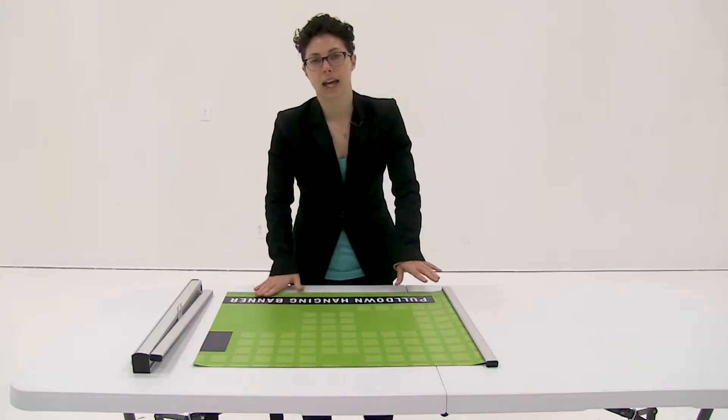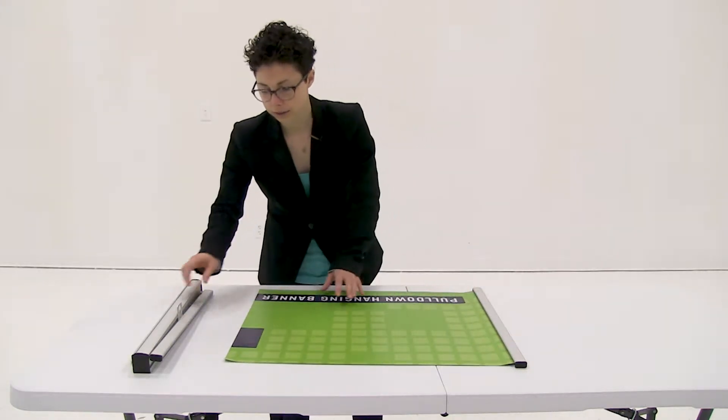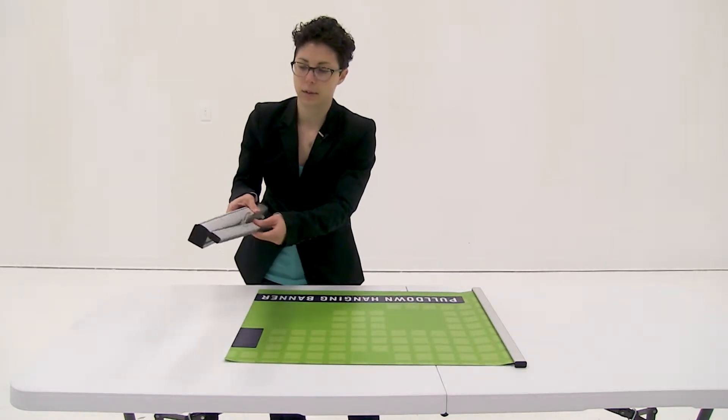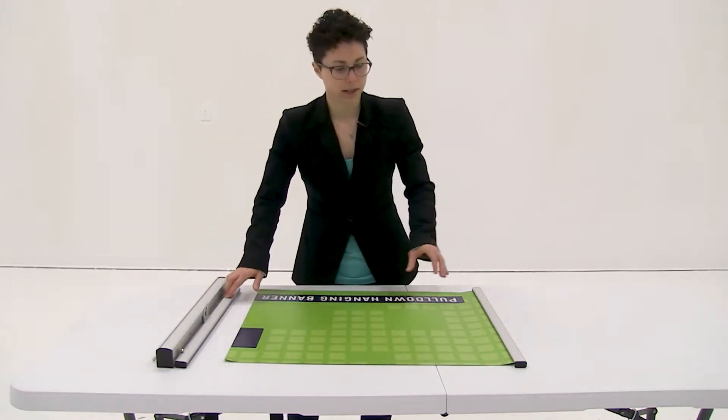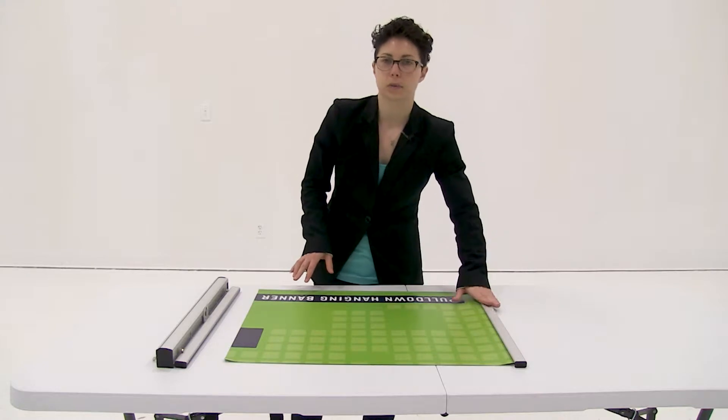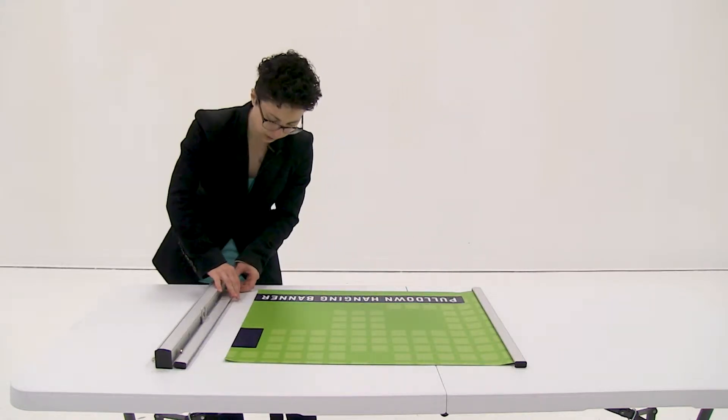You're going to repeat these exact same steps to install the graphic into the part that hangs from the ceiling. It has the exact same mechanisms as this railing. Remove the end cap.